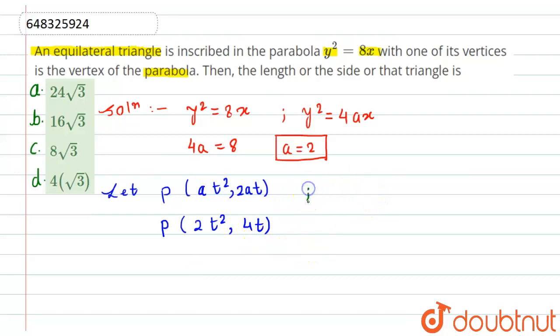so I can say that the value of angle, that is tan of 30 degrees, this will become equal to 4t divided by 2t². So on solving what we get? We get the value of t will be equal to 2√3 because tan 30 is what...